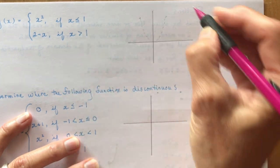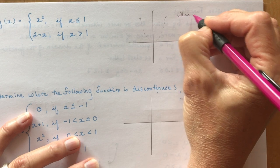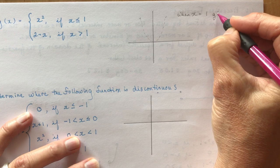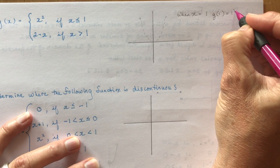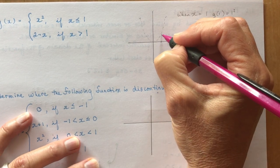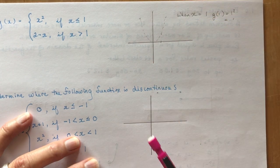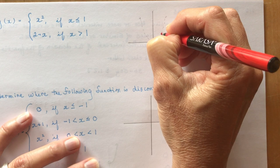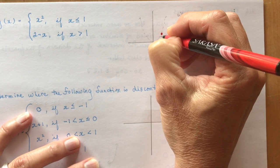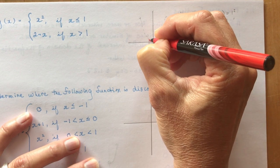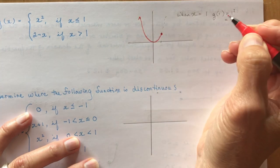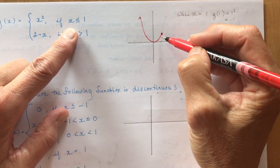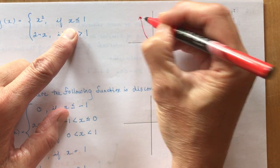When x = 1, g(1) = 1² = 1. So the point (1, 1) is on the graph, and since it's less than or equal to, I make it a solid circle. The rest of the parabola extends to the left. So we've restricted the domain of this function to x ≤ 1.